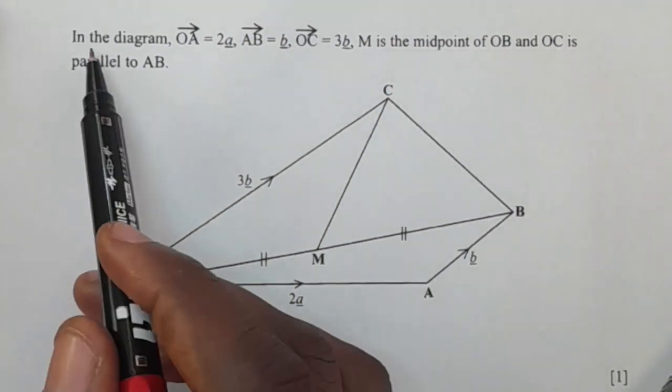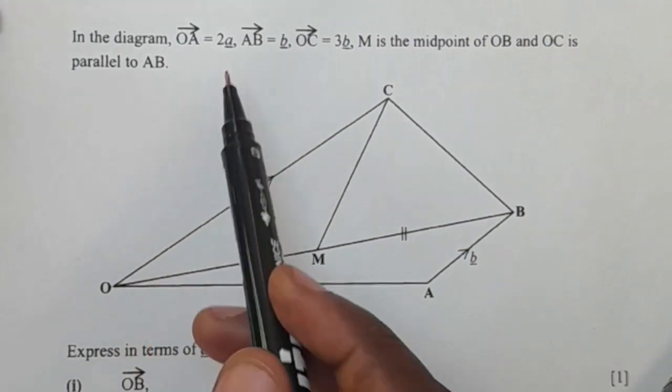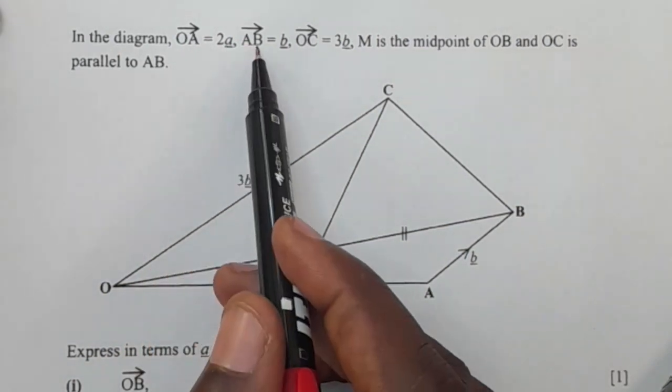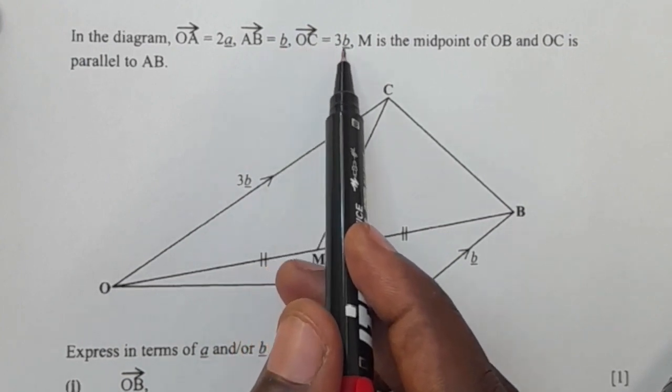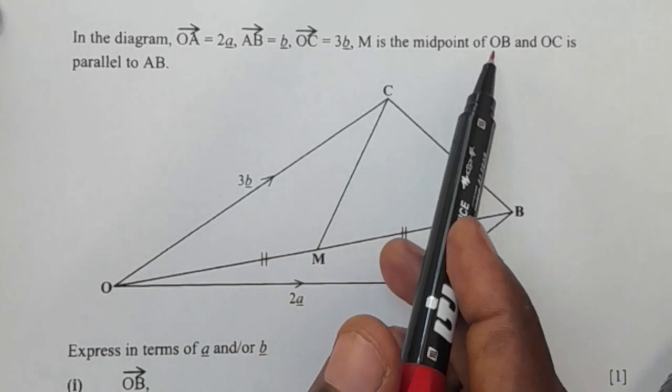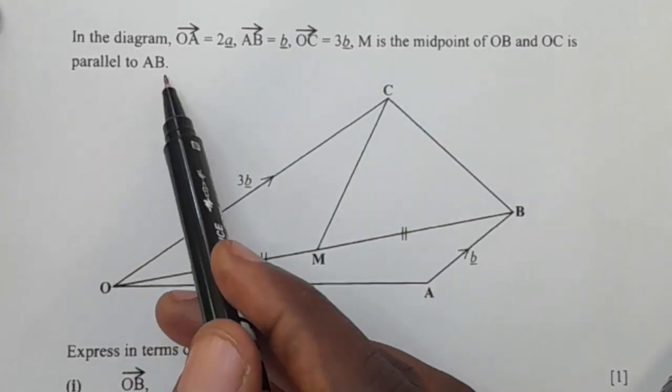In the diagram, vector OA is equal to 2a, vector AB is equal to b, vector OC is equal to 3b, M is the midpoint of OB and OC is parallel to AB.